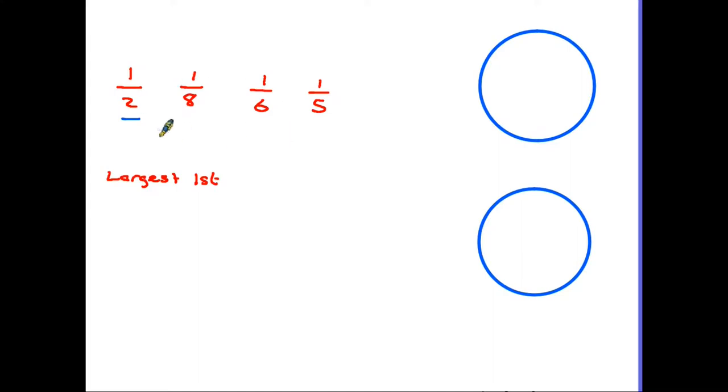So out of this group here the largest fraction is in fact the half. Then it will be the fifth, the sixth and the eighth. So from largest first we are actually putting them in order with the bottom number being the smallest first.